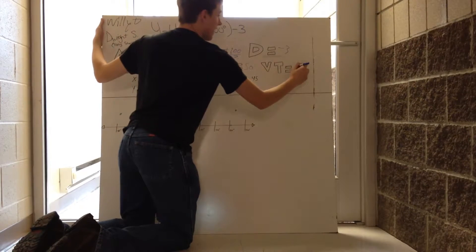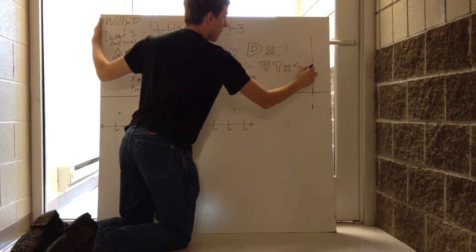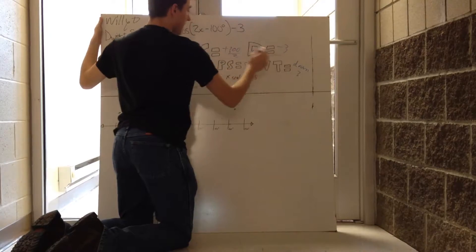And then vertical translation will be down 3 because it's negative 3 on D.